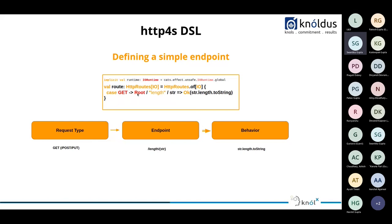When creating a route, the root keyword consumes the leading slash, so your complete endpoint starts from slash onwards. An important point: path parameters are always strings by default — whatever is passed through the endpoint will be a string. If you need to work with an integer, long, or double, you'll have to handle that conversion within your route itself. By default, everything passed from the client as part of the endpoint will be a string.